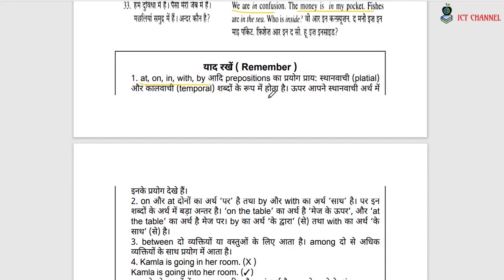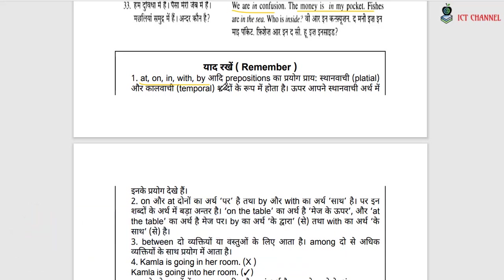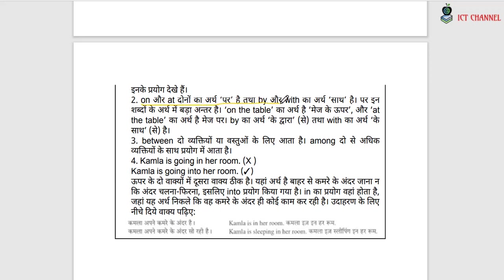Prepositions like at, on, in, with, by are used both as placial (location) words and temporal (time) words. 'On the table' means on top of the table, while 'at the table' means at the table — there is a difference between the two. Similarly, 'by' means by means of, and 'with' means together with — these are different in meaning.